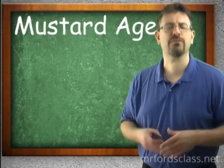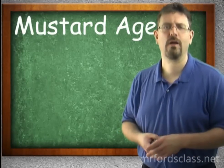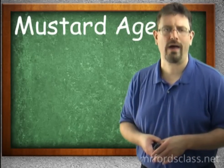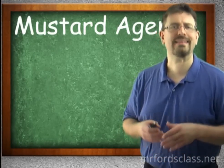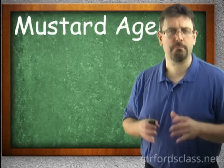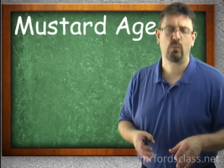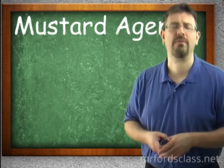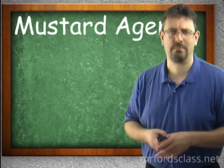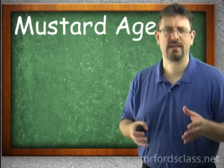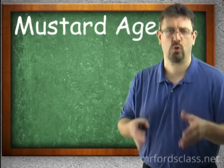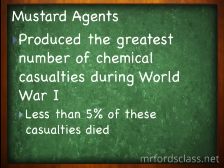The mustard agents first made their appearance during World War I. They were first developed in the late 1800s, and both sides of the conflict in World War I made and used these weapons against their enemies. If you remember from your history classes, you might remember something called trench warfare — there's your tie-in. Mustard-type blistering agents produced the greatest number of chemical casualties during World War I.